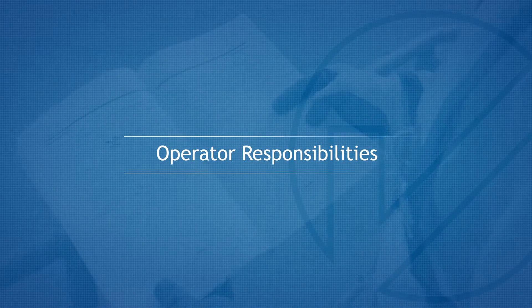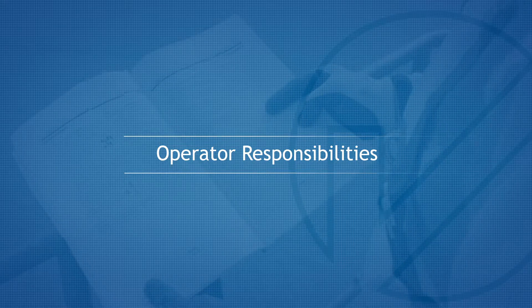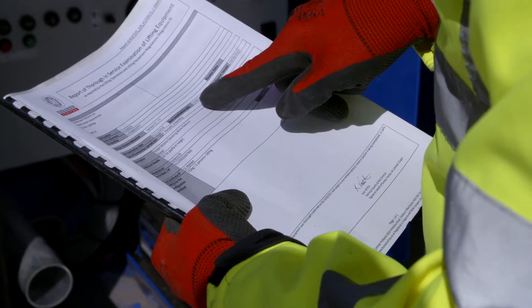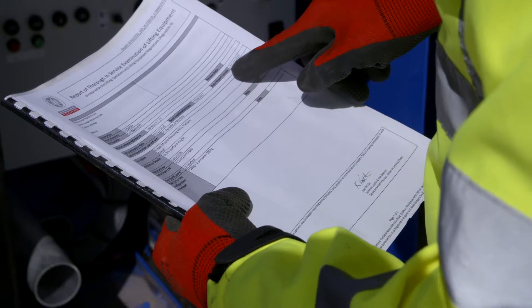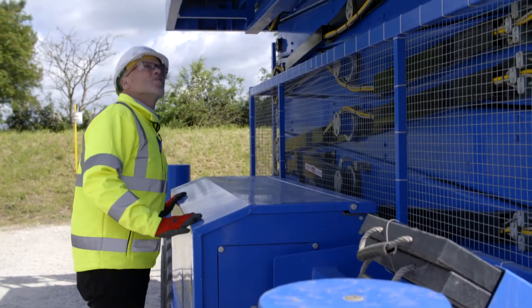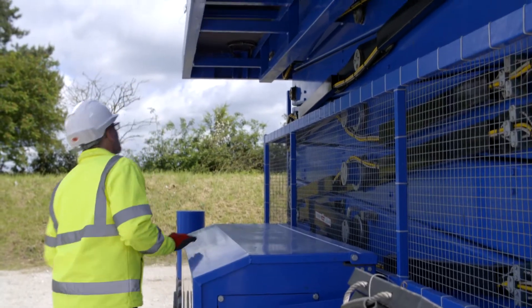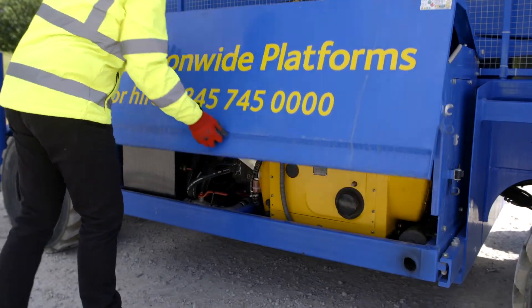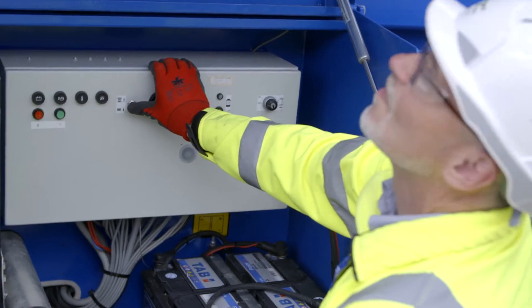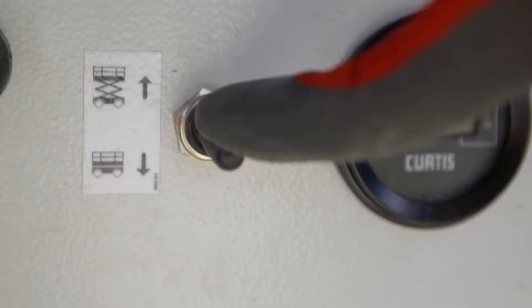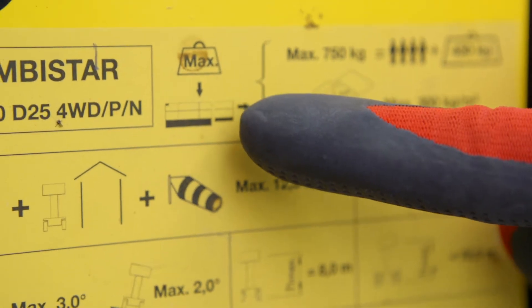Operator responsibilities: Before using the machine, please ensure that the machine has an up-to-date thorough examination. It is a mandatory requirement that a pre-use check is completed. This should include a full function check of all the controls, including the emergency lowering controls. Please refer to the machine warning decals and operator's manual before use.